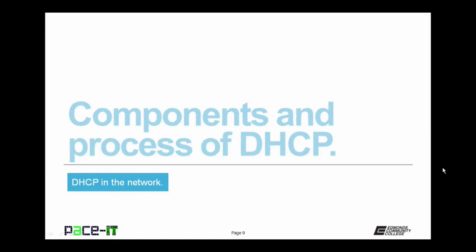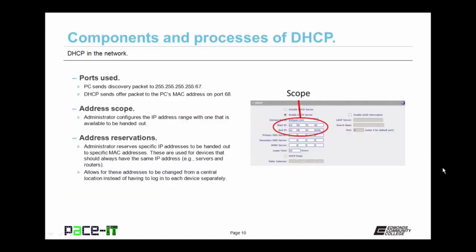Now let's talk about components and the process of DHCP, beginning with the ports used. The PC sends its discovery packet to the broadcast address 255.255.255.255 on UDP port 67. When the DHCP server responds, it responds to the PC's MAC address — media access control address — on UDP port 68. The PC uses UDP port 67; the DHCP server responds on UDP port 68. Then there's the address scope — the IP address range that the administrator configures on the DHCP server — the range of addresses the DHCP server can hand out to individual nodes.